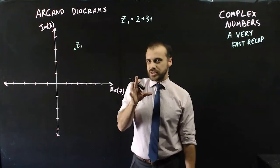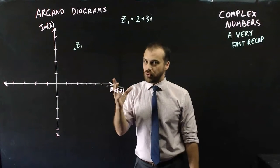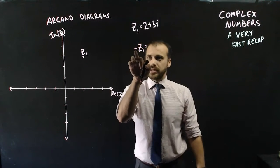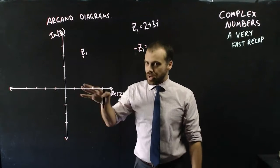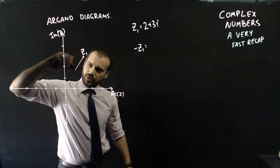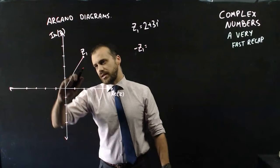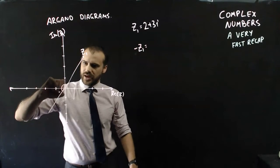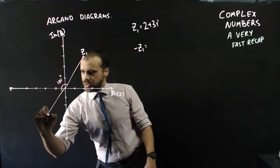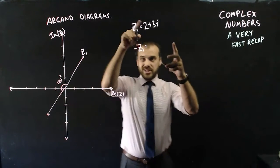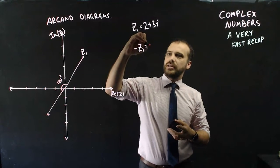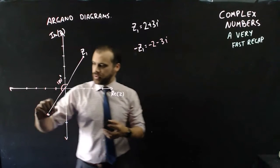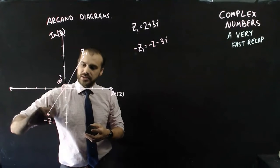Now, we can do some funky things to z1 to move it around or transform it on the argand diagram. If I were to take z1 and multiply it by negative 1, so I get negative z1, on the argand diagram, what that's going to do, if I draw a line like that, it's going to rotate it 180 degrees. Something like that, 180 degrees. And it's going to be here. Now, if I just did it, multiply it by negative 1, you can see what I get. I get negative 2 minus 3i. And that's what we have here. So that's negative z1.